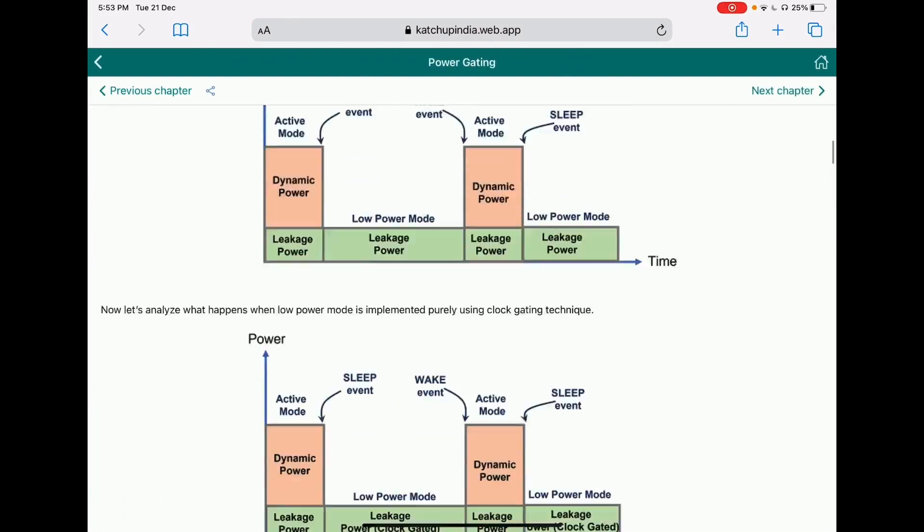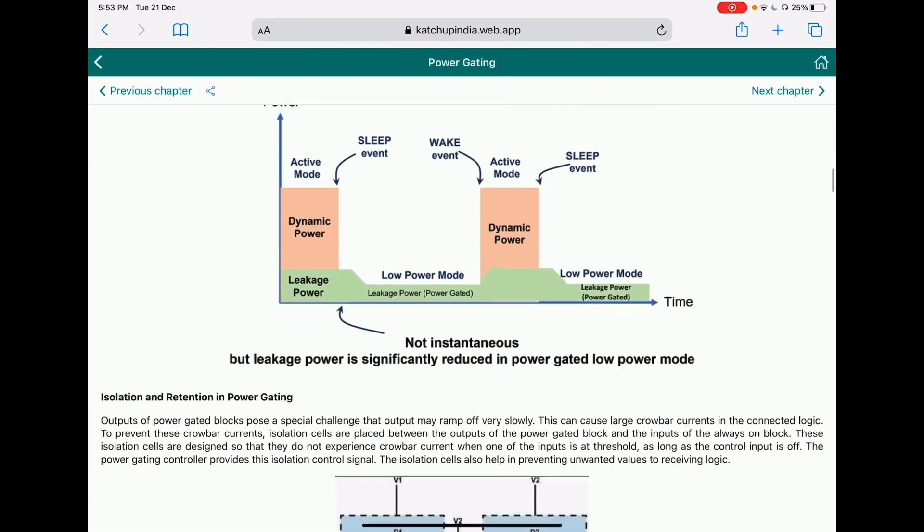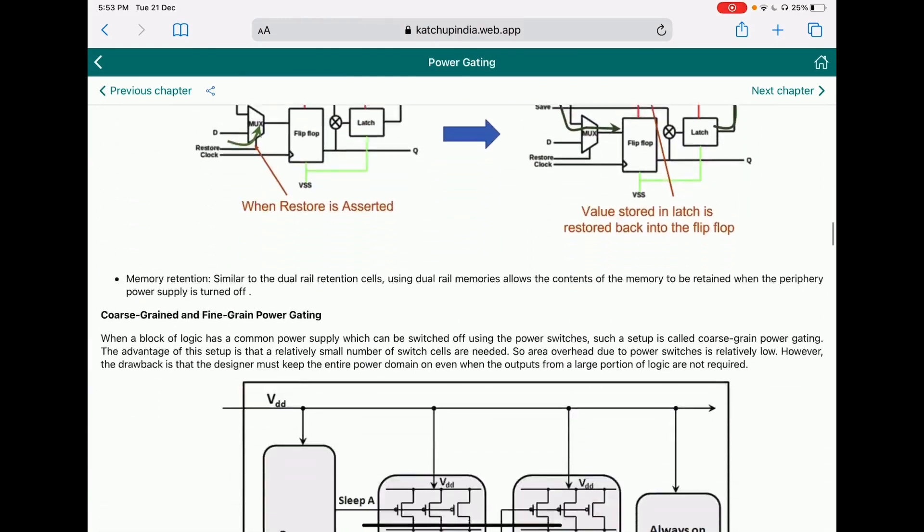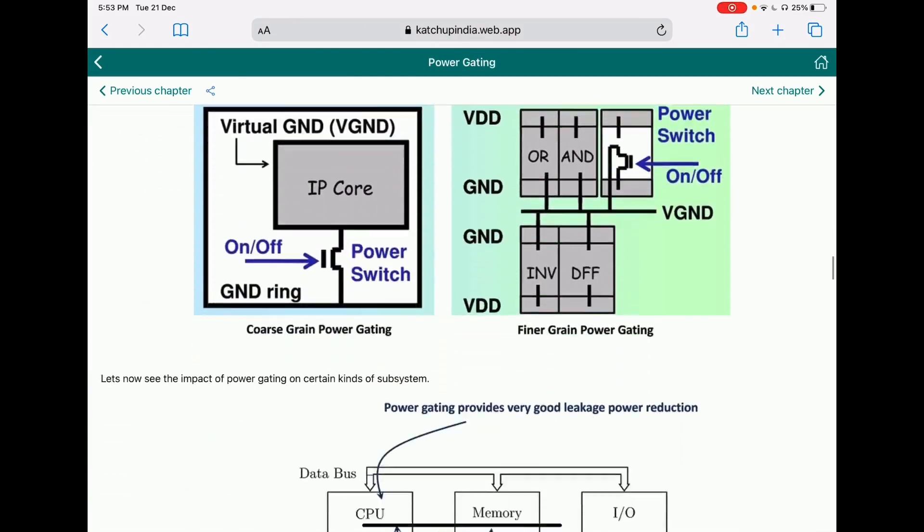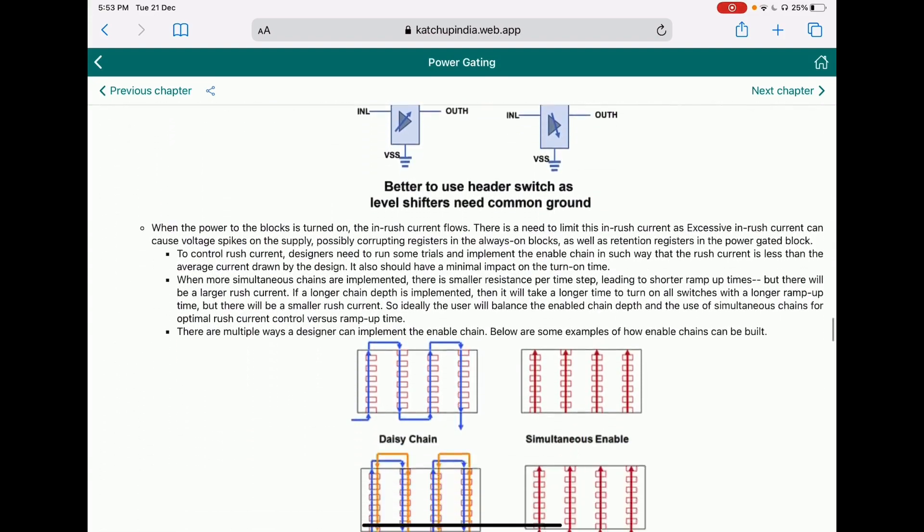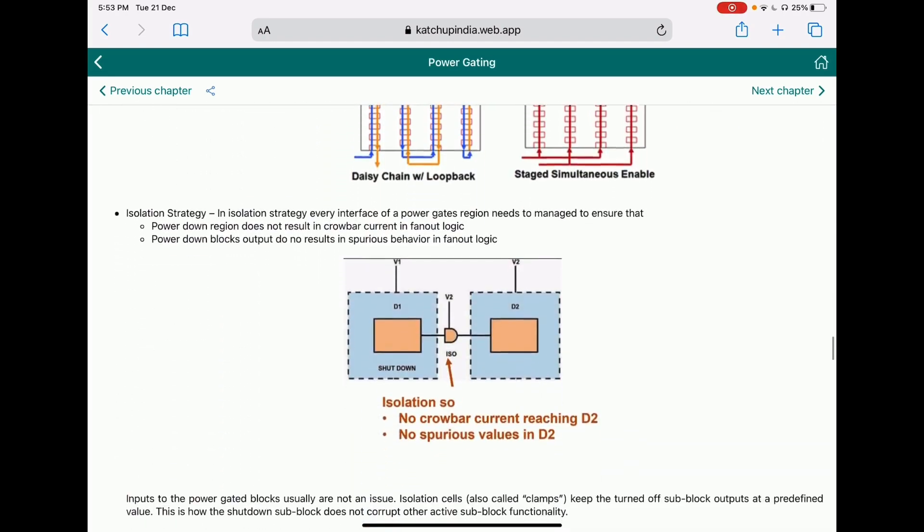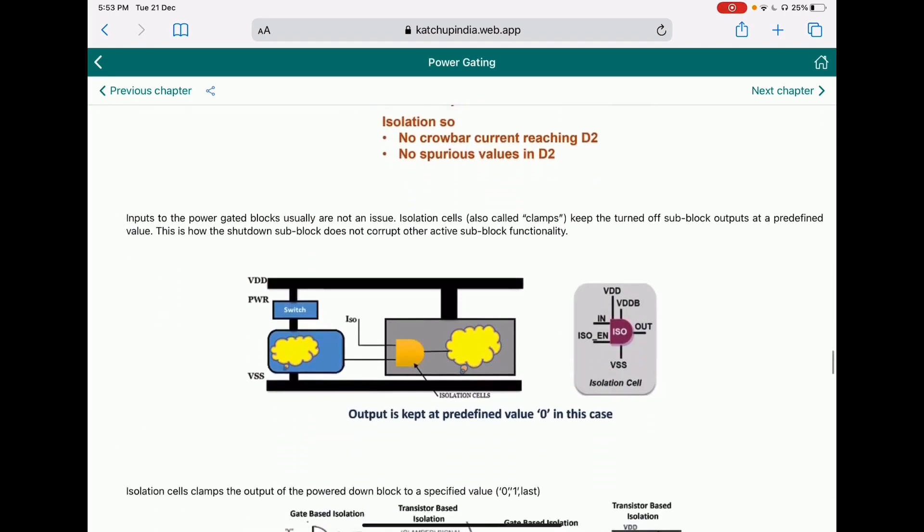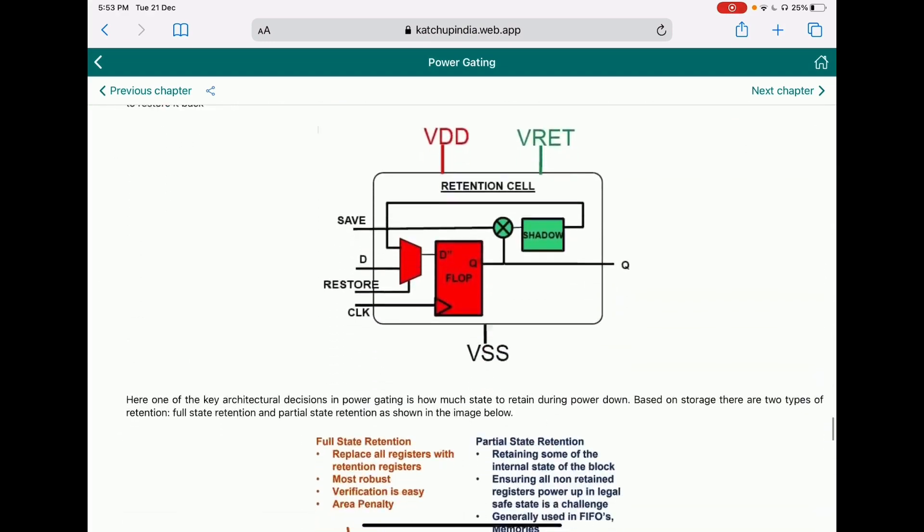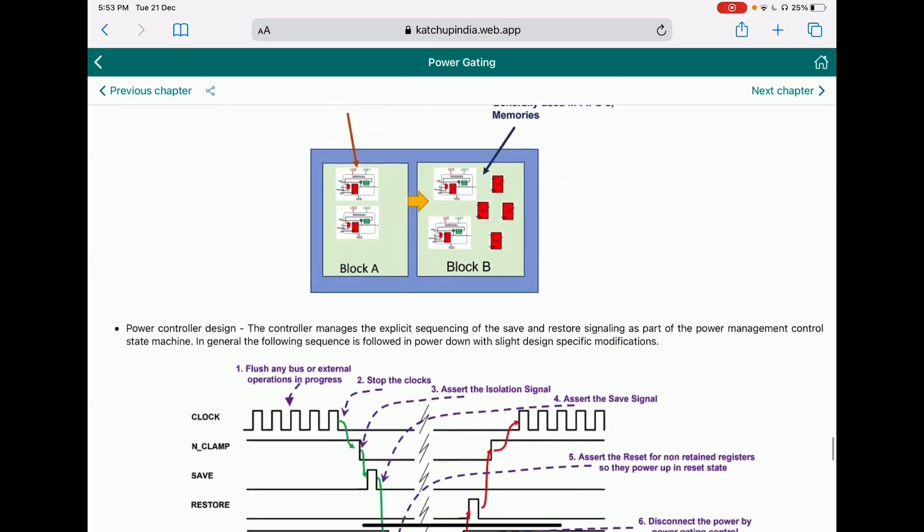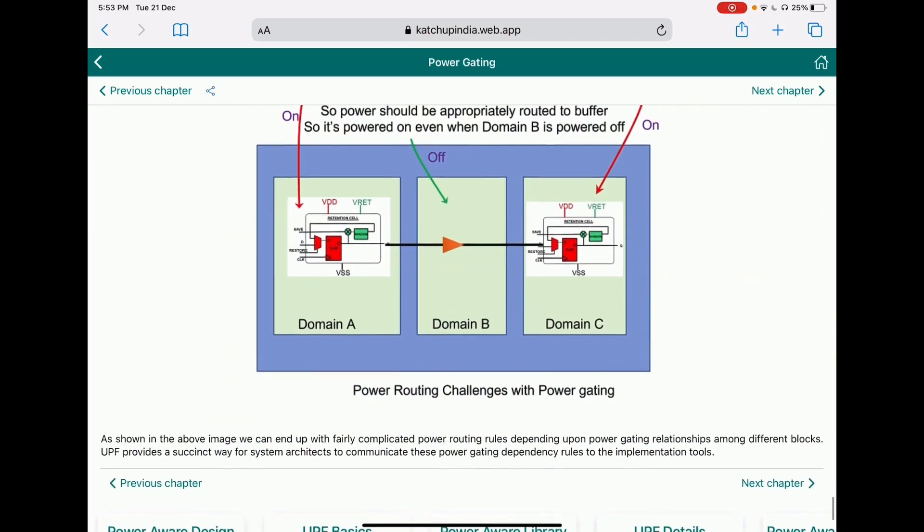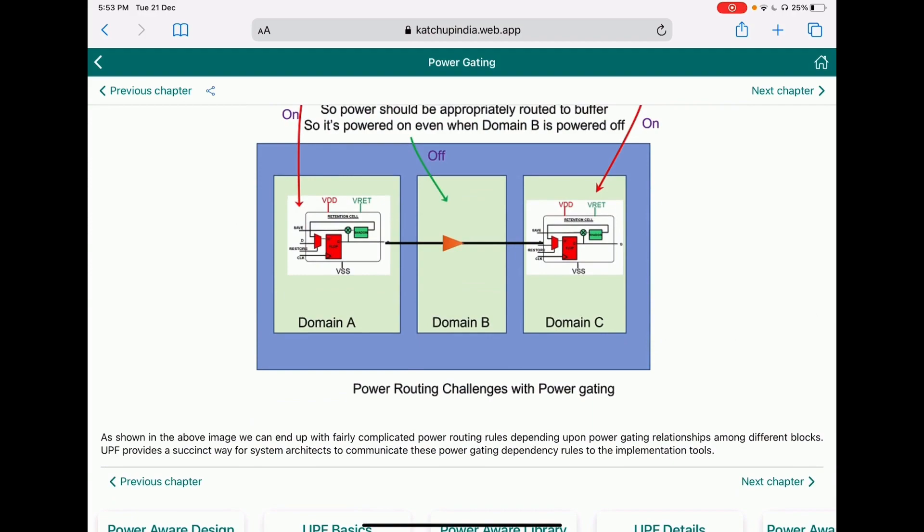The power gating chapter covers the components of power gating - dynamic power, leakage power, isolation, retention cells, coarse grain power gating, finer grain power gating, how to design level shifters and isolation cells. We go into save-restore details, how you can do it, what is the sequence for save-restore, understanding it deeply using pictorials, waveforms, and all those things.